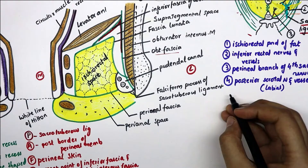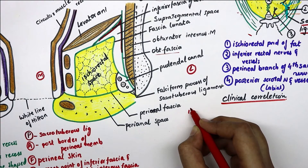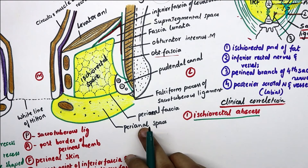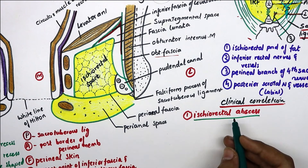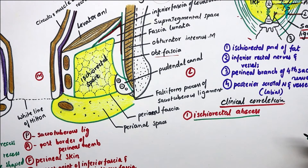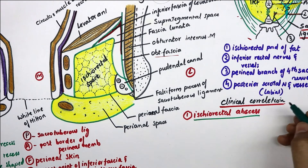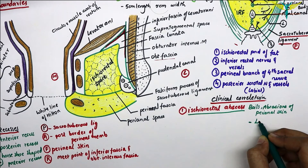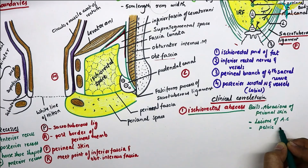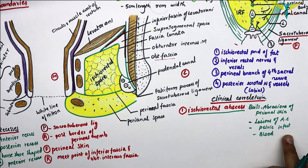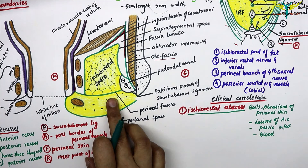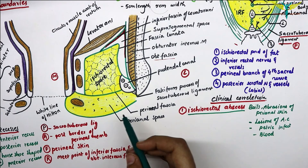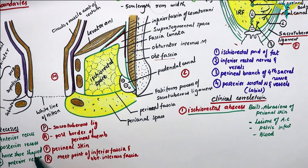Now coming to the clinical correlation. The first is the ischiorectal abscess. The ischiorectal fossa is prone to infection due to its location. Infection may occur from boils and abrasions of the perianal skin, from lesions within the anal canal, from pelvic infection, or rarely via the blood. It often forms an abscess called the ischiorectal abscess. The fat in this fossa is loosely arranged, so swelling can occur without tension or with little pain. The infection may readily pass from one fossa to another through the horseshoe-shaped posterior recess.